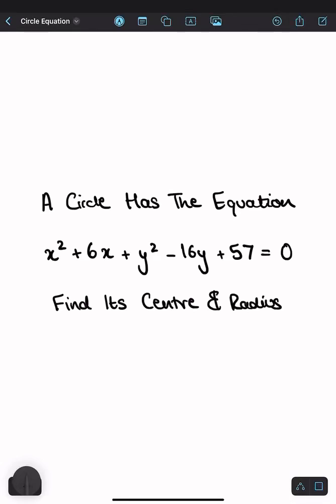The circle has the equation x squared plus 6x plus y squared minus 16y plus 57 equals 0. Find its center and radius.